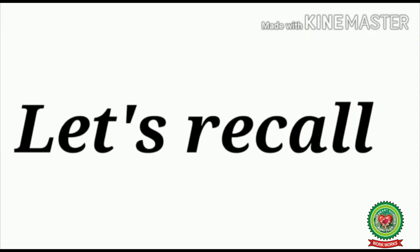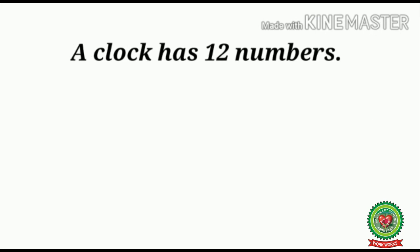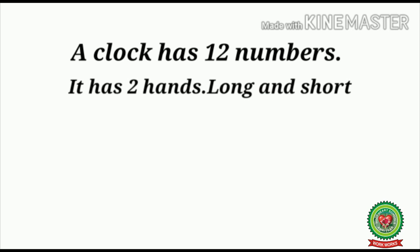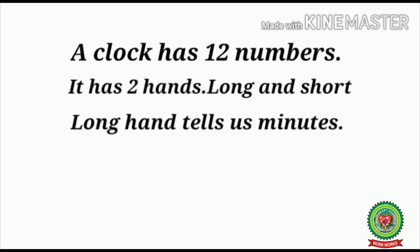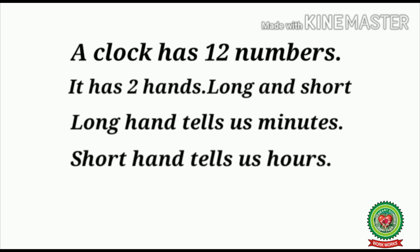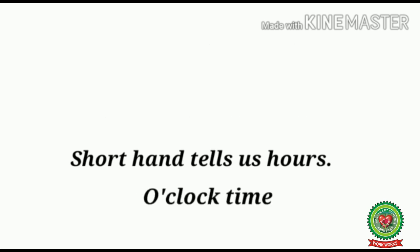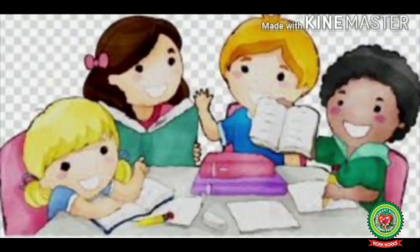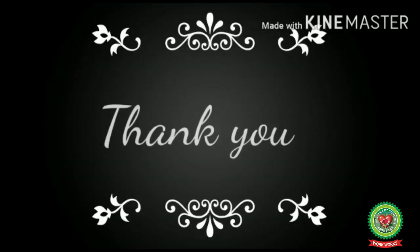Now let's recall what we have done. A clock has twelve numbers and two hands — long and short. The long hand tells us the minutes and the short hand tells us the hours. And we learned how to read o'clock time. Now children, open your homework and do the related exercises on your copy. Thank you.